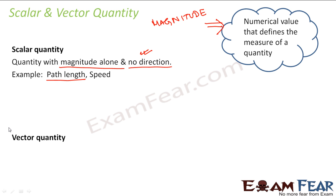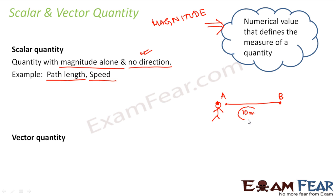An example of a scalar quantity is path length, and we'll talk about speed later. For example, you have a boy standing here — let us suppose the boy starts moving and reaches from point A to point B. I say that the distance covered by the boy is 10 meters. This 10 is a numerical value which tells me the measure of the quantity — it gives me the measure of the path length, the measure of the distance. So this 10 is the magnitude.